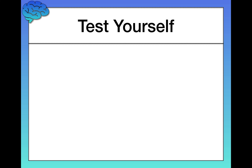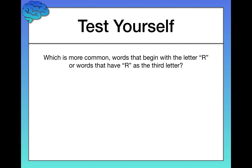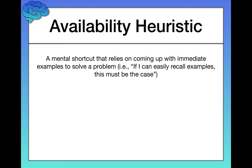Let me illustrate with an example. Which is more common in the English language: words that begin with the letter R, or words that have R as the third letter? This study was actually done long ago and replicated many times since. What we tend to see is that people far and away assume that words beginning with the letter R are more common. But this is incorrect — in reality, words that have R as the third letter are significantly more common.